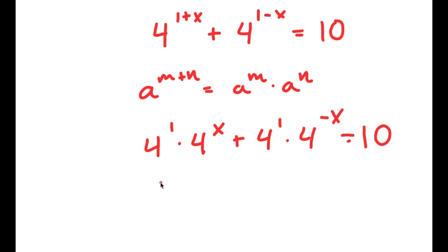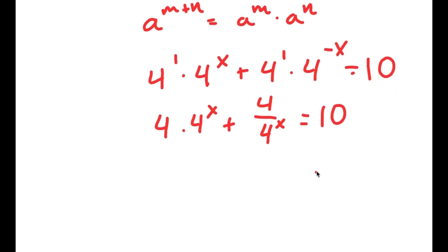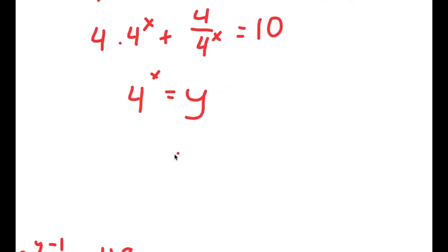Now, 4 to the power of negative x is the same thing as 1 over 4 to the power of x. And 4 times 1 over 4 to the power of x is going to be 4 over 4 to the power of x. So now I'm going to let 4 to the power of x equal the variable y. So now I have 4y plus 4 over y is equal to 10.